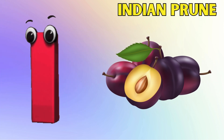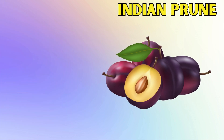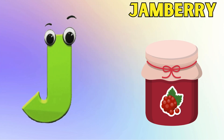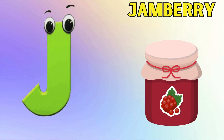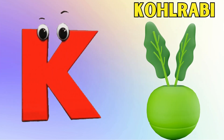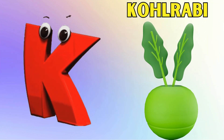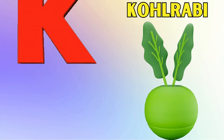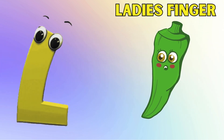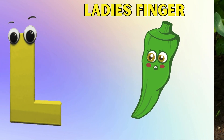I is for Indian prune, Indian prune. J is for jamberry, jamberry. K is for kohlrabi, kohlrabi. L is for lady's finger, lady's finger.